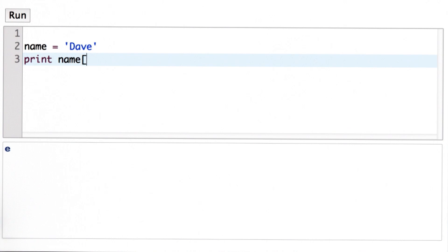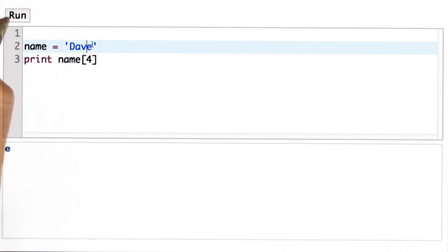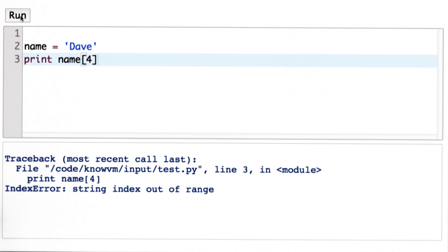Suppose I tried to do name index 4. Well, there's no character at position 4. Remember that the indexes start at 0, so this is 0, 1, 2, 3. When I run this, I get an error because I've asked for position 4 of the string. That's out of range, so the error says that the string index is out of range.